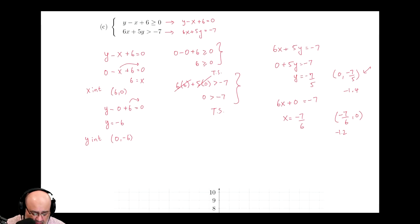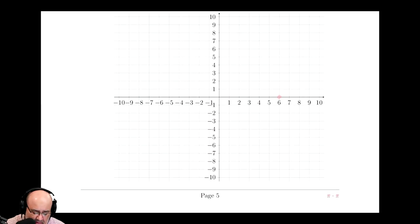So the two points for the first equation are 6, 0, and 0, negative 6. So 6, 0 is right there. 0, negative 6 is down there.